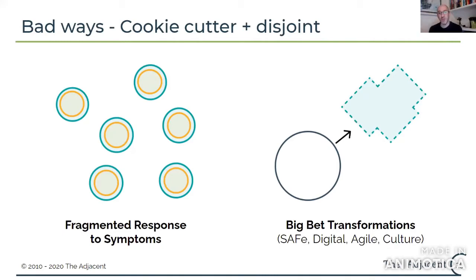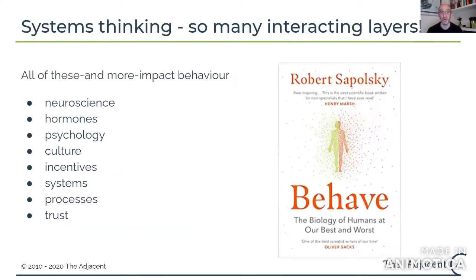The second bad model: a CEO or CTO says 'we're all going to go SAFe' or 'we're all going digital' and they pick a cookie-cutter big pattern model which has never been contextualized to their organization and slap it down as a one-size-fits-all. By definition these things cannot work in a complex world, and yet this seems to be one of the most popular models at the moment.